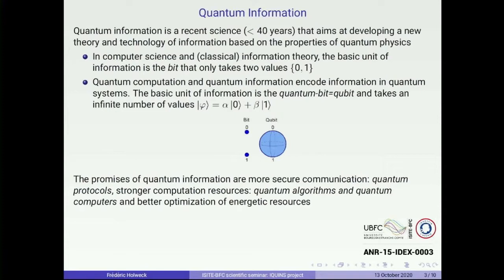We see that we go from the world of discrete information to something infinite and continuous. Of course there is much more to say, because there are problems with measurements and how to manipulate this kind of system. But it gives you an idea of the difference between classical and quantum information. The promises of quantum information are more secure communication — we call it quantum communication protocols — stronger computational resources, which you have probably all heard about as quantum computers, but also applications in managing energetic resources.